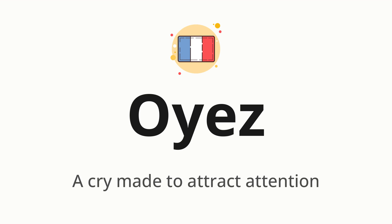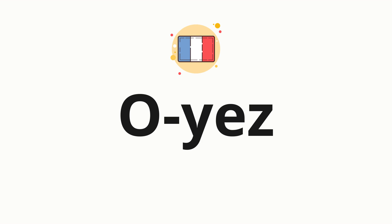Let's say it all together: Oye. One more time: Oye. Now let's split the word into syllables and then pronounce each syllable one by one. Oye.